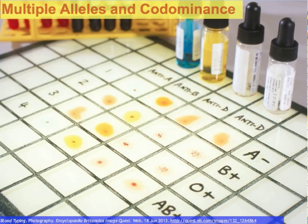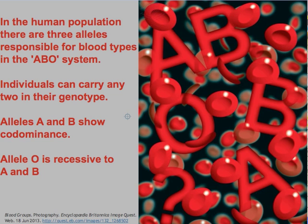You might have been asked the question: what is your blood type? The truth is that human blood type is determined by several proteins in our blood. The most common group of blood proteins that we refer to when someone asks your blood type is the ABO system. In the human population, there are three alleles responsible for this ABO system. The system of positive and negative — the Rh system — is another blood group system, and so is the MN system, but the most common one is the ABO system.